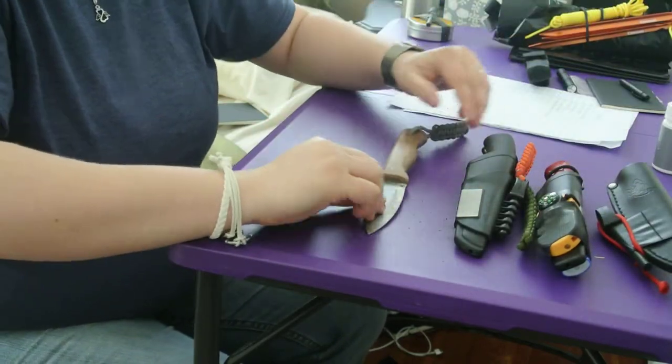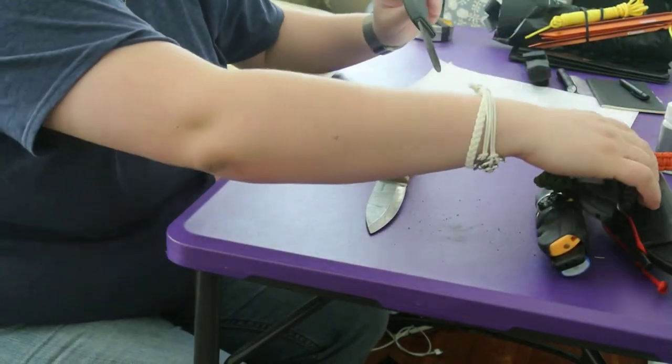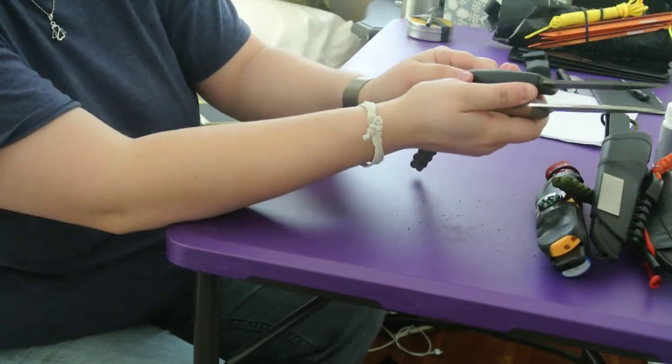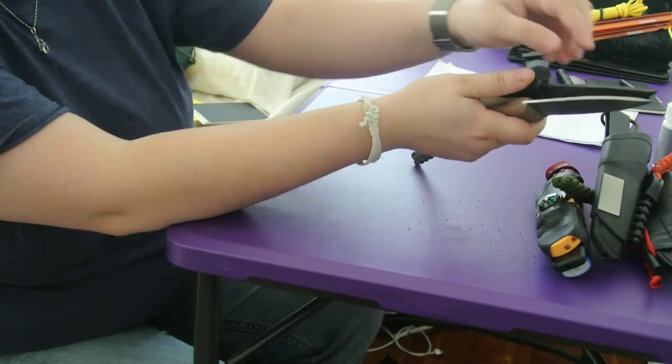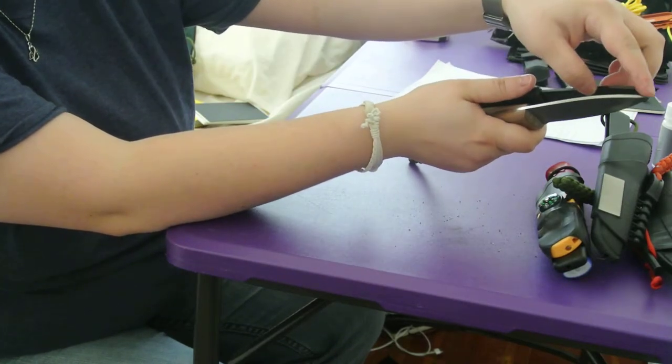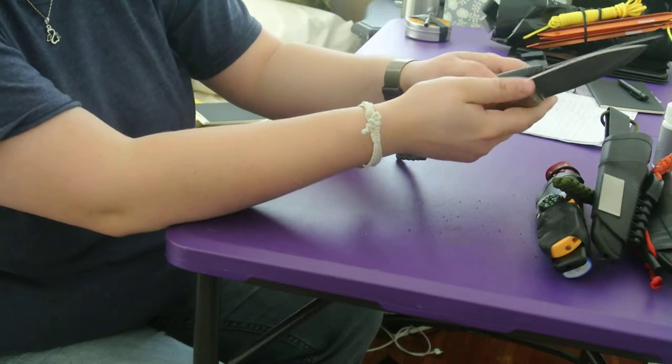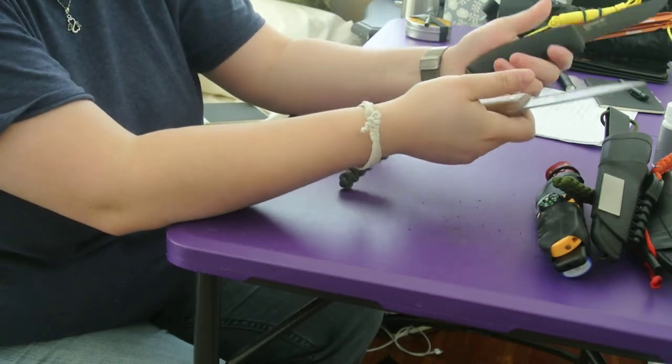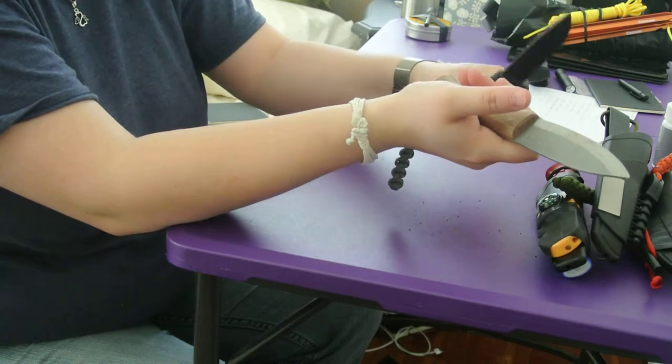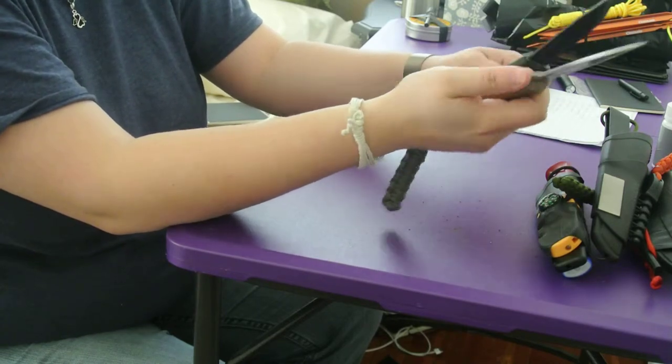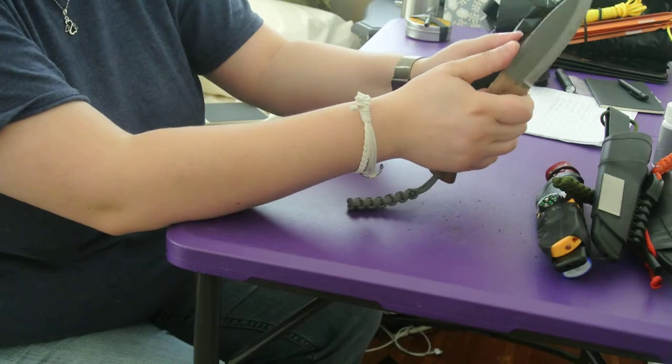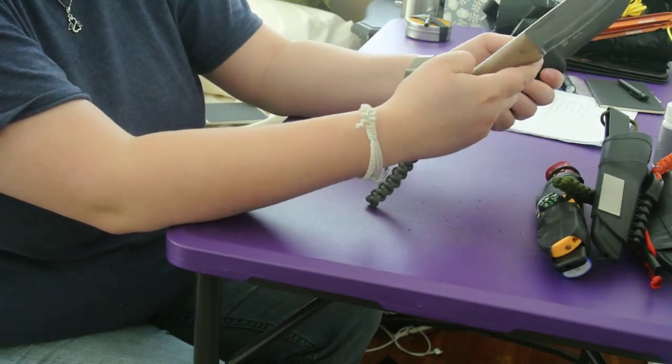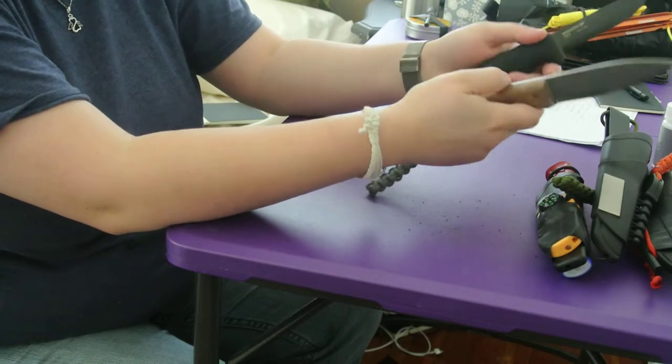I think the Bushcraft Black is even thicker than this Condor knife, just by a little bit. You can see the points there. This one's really honed in. But this one's full tang. This one is a rat tail tang or three-quarter tang. But if I have an axe or a saw, I'm not really going to be batoning too much wood anyway. So I'm really not worried about the full tang versus the rat tail tang at all.